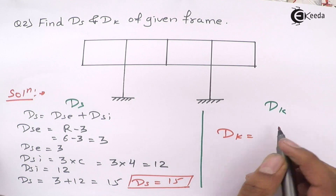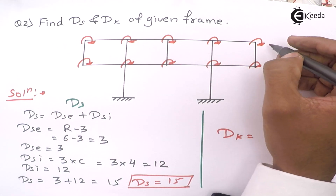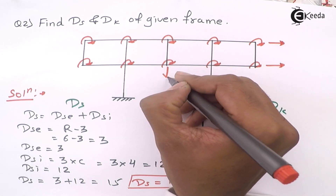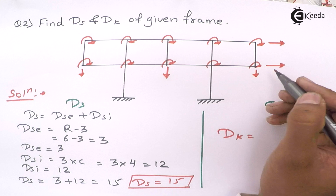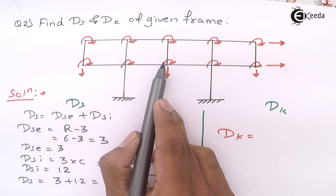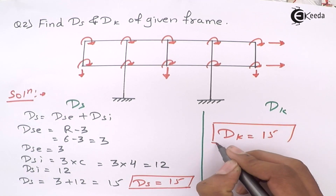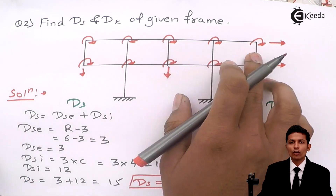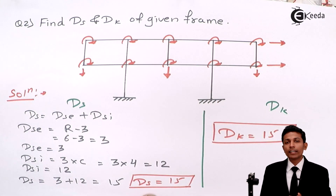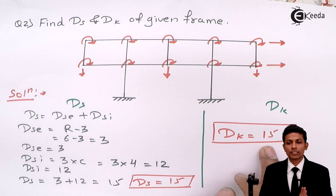For DK of problem two: this member moves in this direction, others also have no load and bend downward. Counting all degrees of freedom: 1, 2, 3 ... 14, 15 — DK = 15. The examiner will check DS = 15 and DK = 15 as correct. I hope you understand; share with your friends and don't forget to subscribe to the IGRA channel. Thank you.